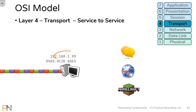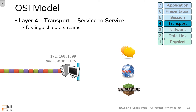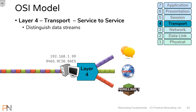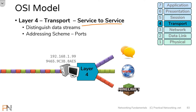Each of those programs is meant to send and receive data on the wire. All that data will use the Layer 3 header to accomplish end-to-end delivery and the Layer 2 header to accomplish hop-to-hop delivery. The question then is: how do we make sure the right program receives the right packets? That's where Layer 4 comes into play. Layer 4 is there to distinguish data streams — it's going to take all that incoming data and make sure that the right program receives the right data. Just like Layer 3 had an addressing scheme for end-to-end delivery and Layer 2 had an addressing scheme for hop-to-hop delivery, Layer 4 is also going to use its own addressing scheme to accomplish service-to-service delivery.